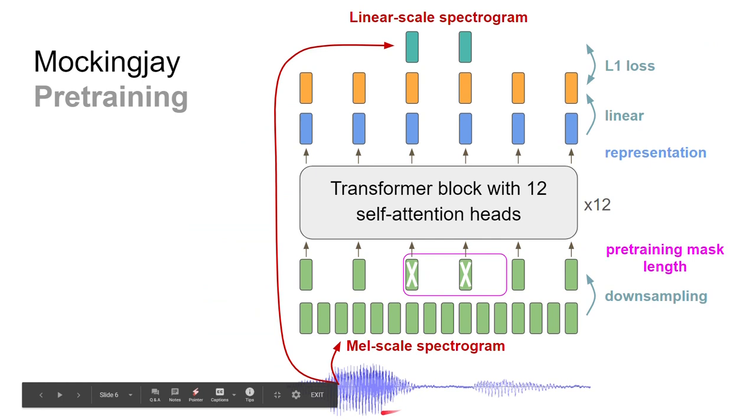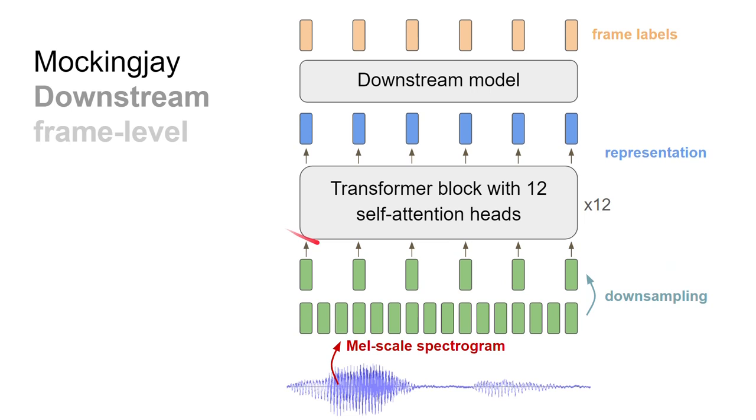Specifically, we follow Mockingjay, which is open source. Mockingjay extracts the acoustic features from waveform and then downsamples by some ratio. During the mask language model pre-training, a range of features are masked, specified by the pre-training mask length. After propagating through BERT, representations are linearly projected and compared to the linear spectrogram with L1 loss. After pre-training, representations are used on downstream tasks.